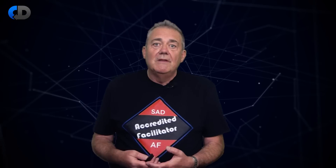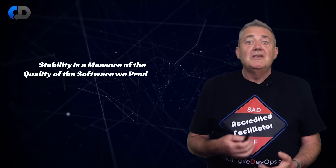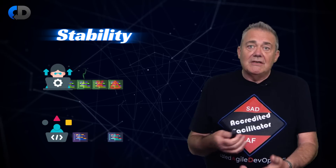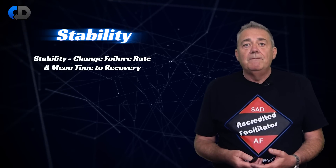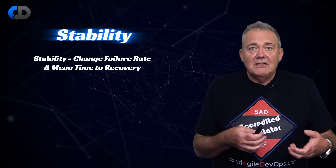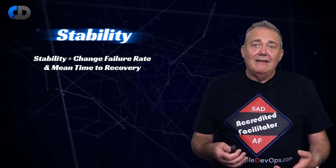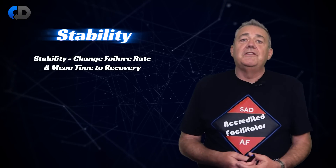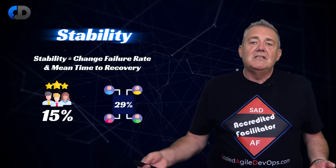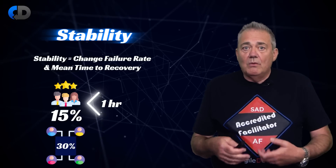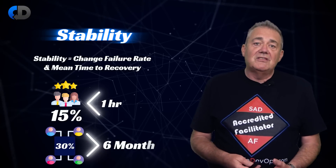The measures themselves are interesting. They don't attempt to measure productivity directly and it's important to consider them as a whole, not independently of one another. They're focused on measuring the flow of changes and their quality. Stability is a measure of the quality of the software that we produce, so you can't mistakenly optimise to produce loads of rubbish and get a good score. Stability is measured by change failure rate and mean time to recovery — what proportion of the time does a change result in a failure when it reaches production, and how long does it take your team to recover? Elite teams have change failure rates in the 0% to 15% range, everybody else in the 16% to 30% range. Elite teams restore service in under one hour; low performers often take over six months.